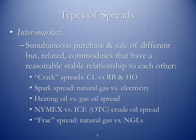Different types of spreads. One is the intermarket spread. This is the simultaneous purchase and sale of different but related commodities that have a reasonably stable relationship to one another. Intermarket means different commodities — not the same commodity.